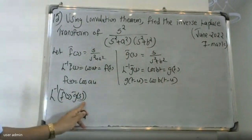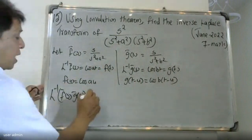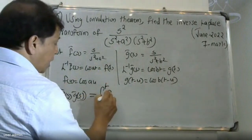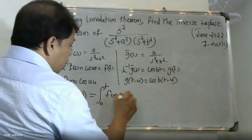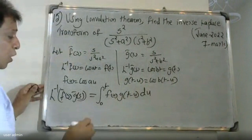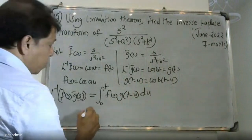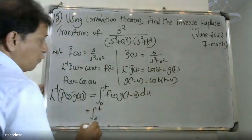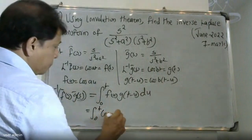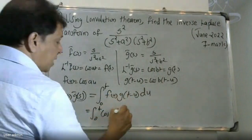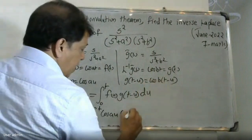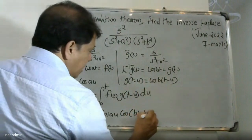By the convolution theorem, the formula is: L inverse of [F̄(s) · Ḡ(s)] = integral from 0 to t of f(u) · g(t − u) du. Substituting, this becomes integral from 0 to t of cos(au) · cos(b(t − u)) du.